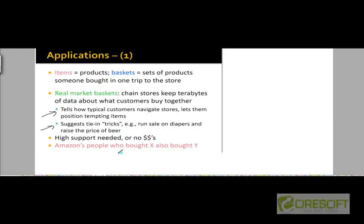Likewise, on Amazon, people who bought a particular item X can also be shown item Y so that Amazon can increase its sales. If people who purchased X are likely to find Y tempting to buy, then by presenting Y to those customers, Amazon can increase its sales relative to the scenario where they don't show item Y to those customers.